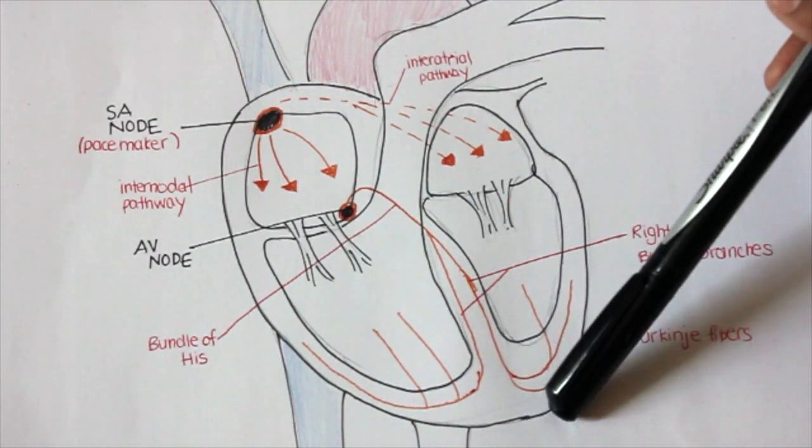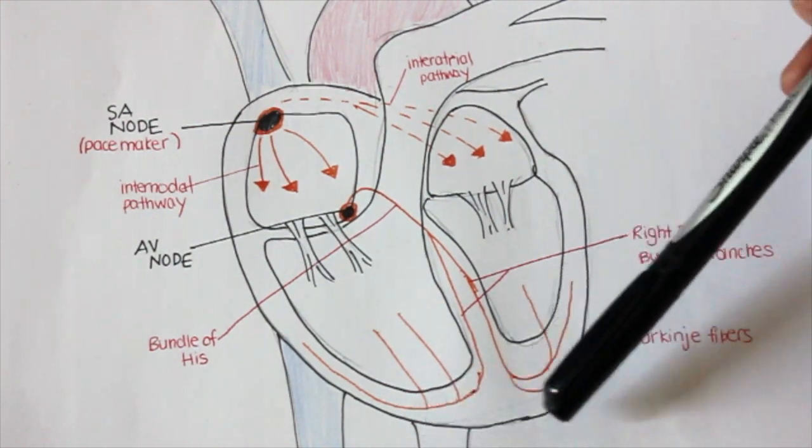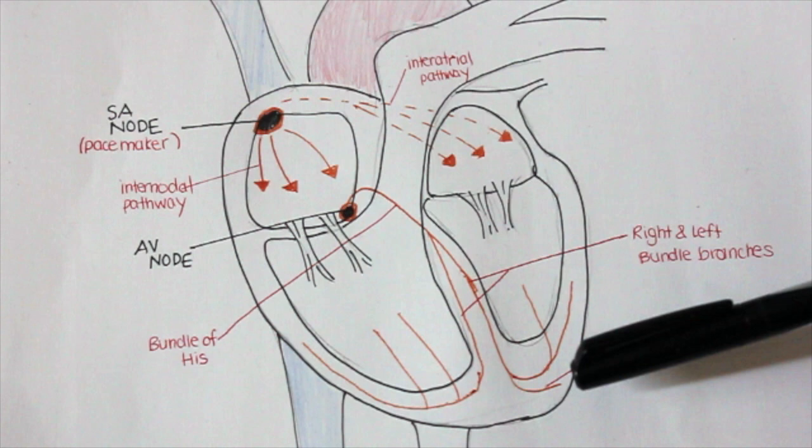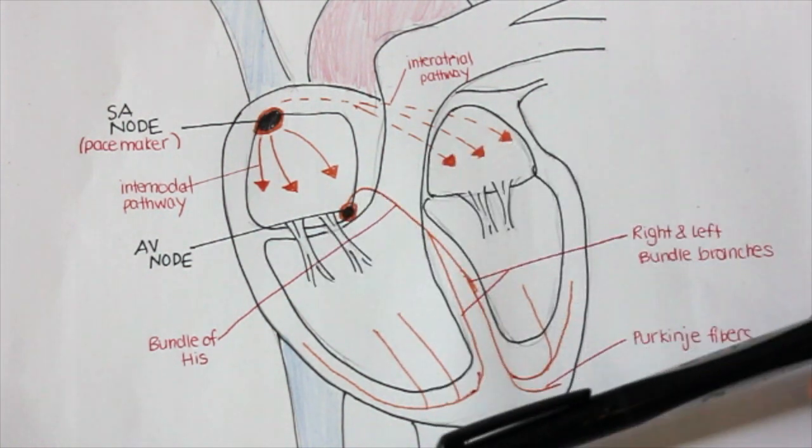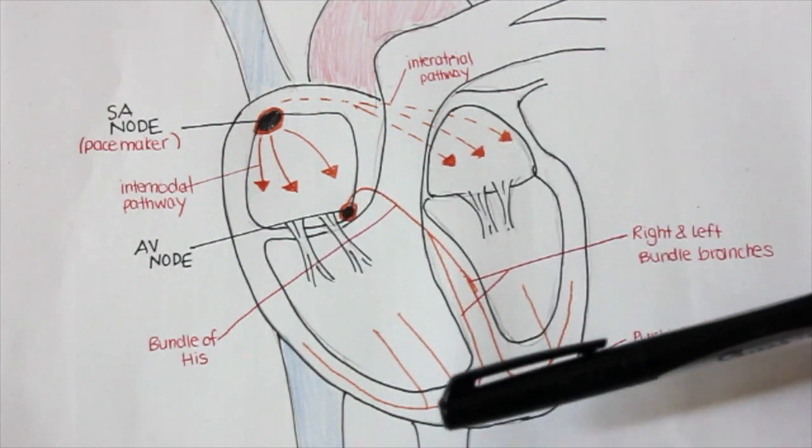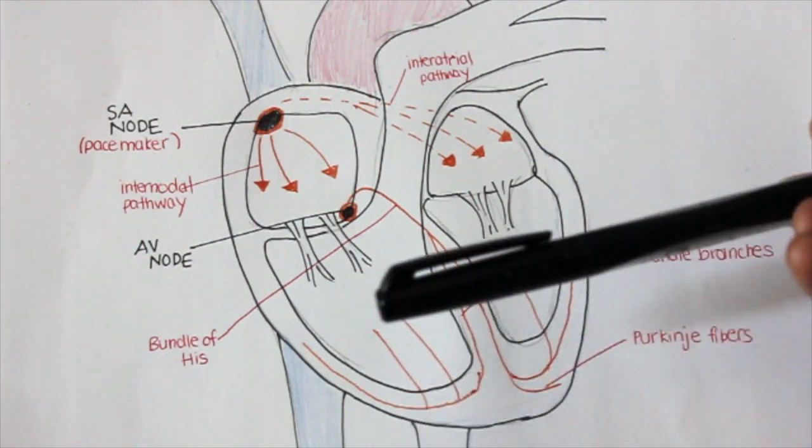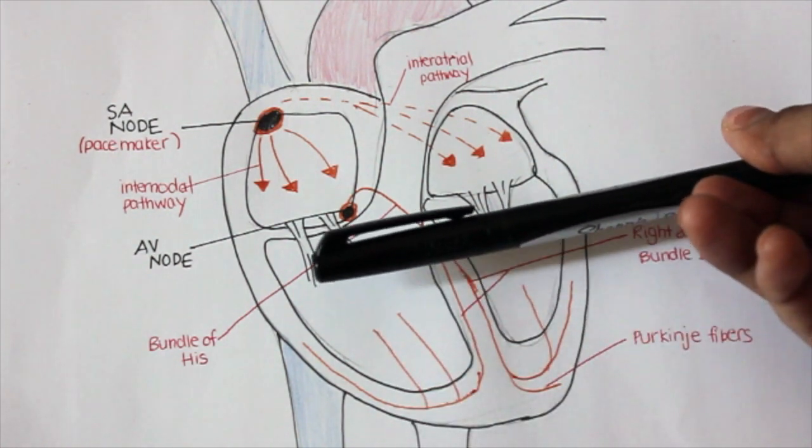It travels down to the Purkinje fibers. From the apex of the heart, this impulse travels upwards to the ventricular myocardium, so that the impulse is created from the bottom towards the top of the heart.